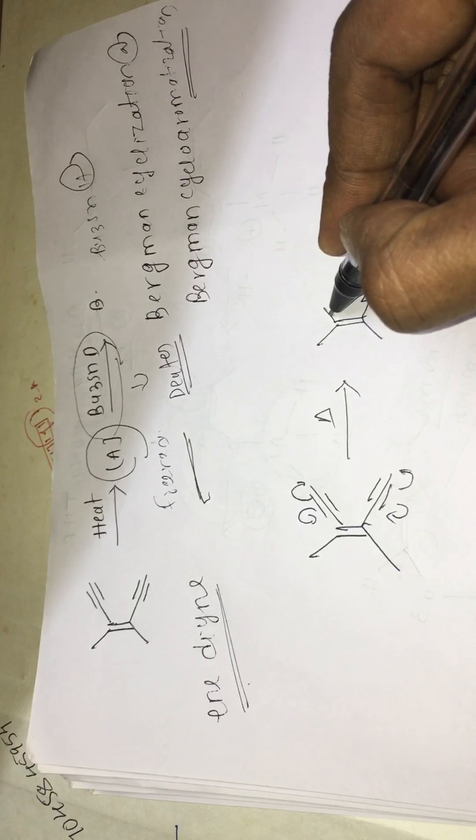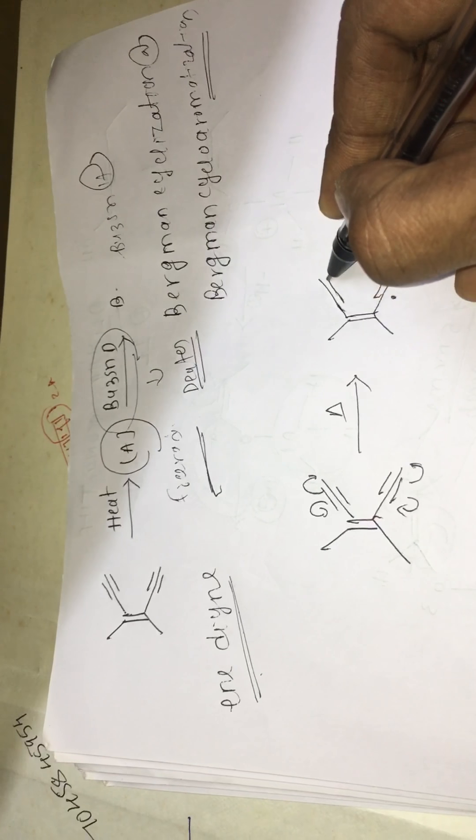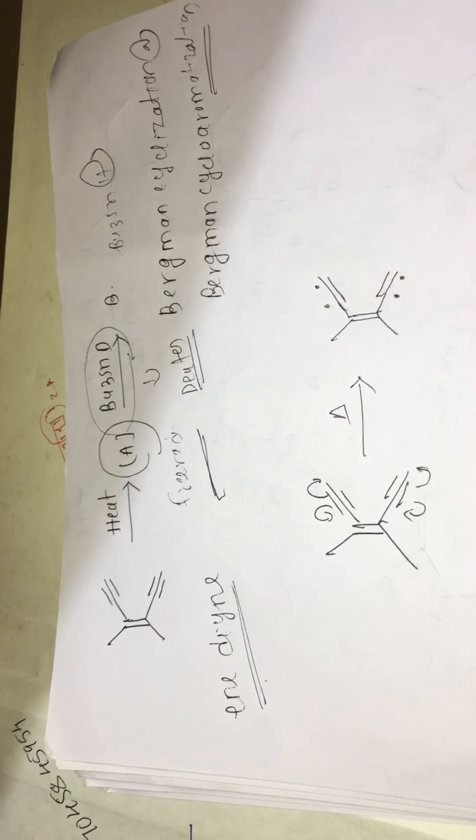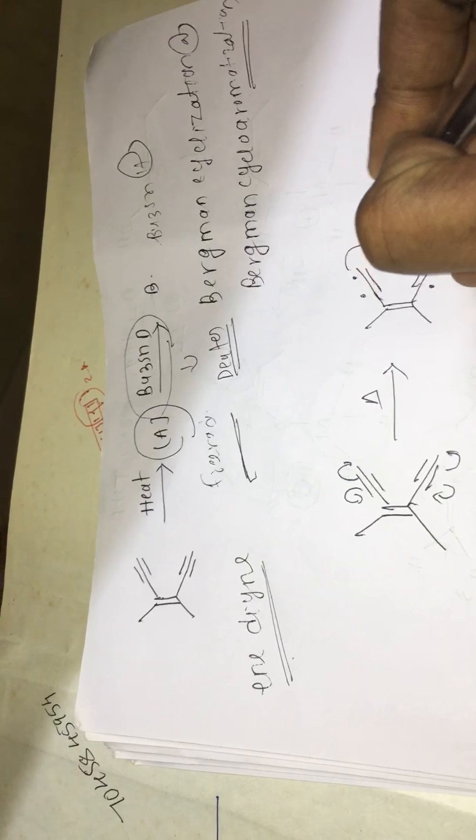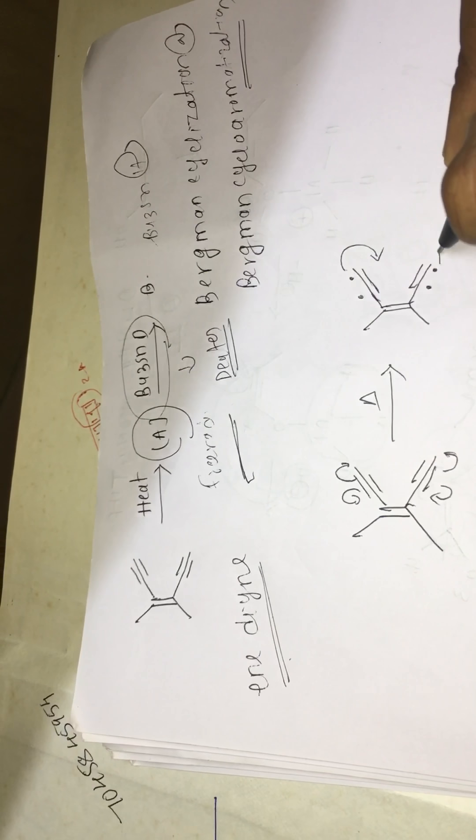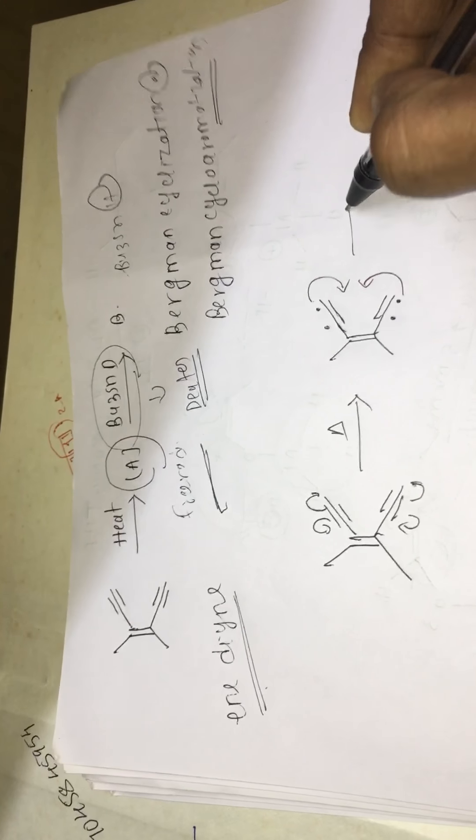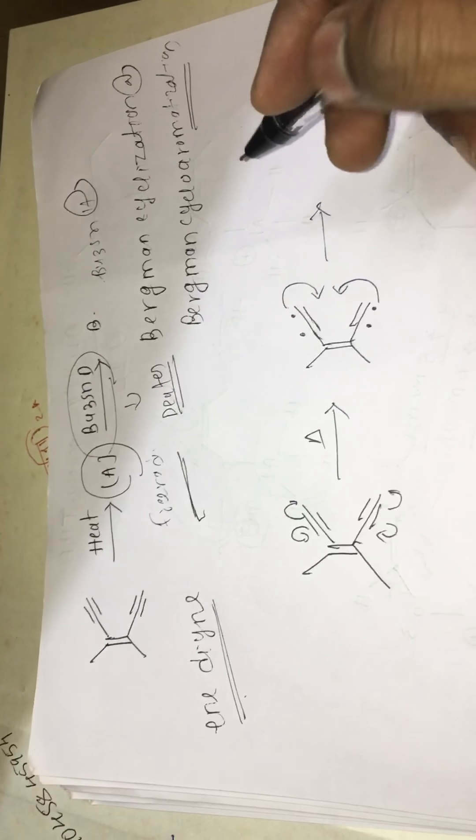Here radical will be generated. And here also free radical will be generated. So now these two free radicals will combine together and they form a bond here.